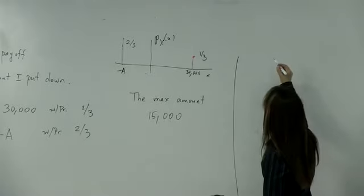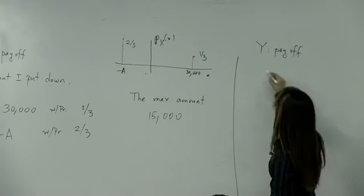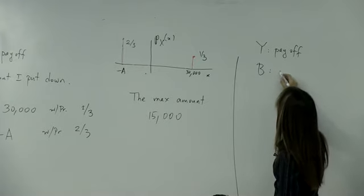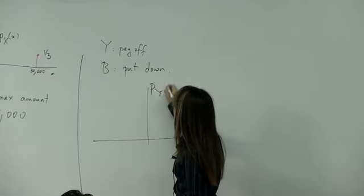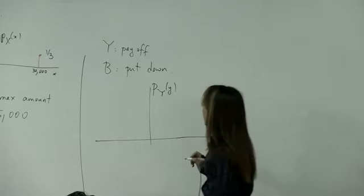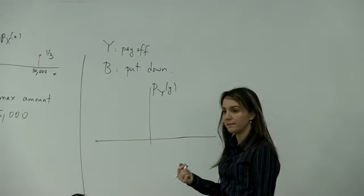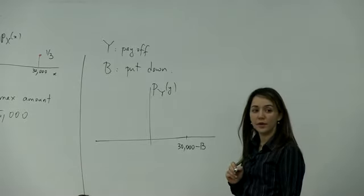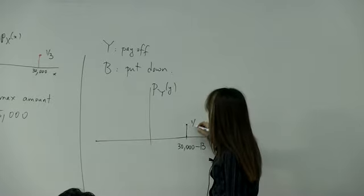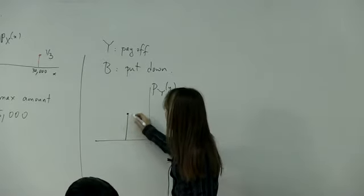In that case, let y be my payoff in the second game, and b be the amount I put down. Let's plot the PMF of y. My payoff is 30,000 minus b if I win, with probability 1/3. And my payoff is negative b if I lose, which happens with probability 2/3.